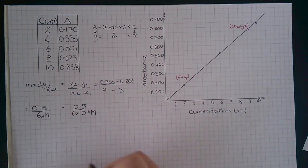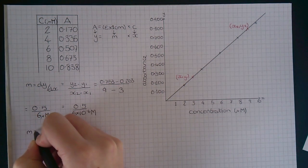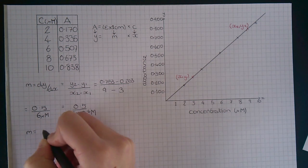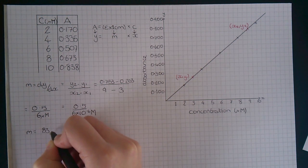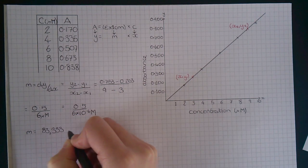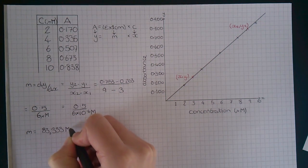When we work this out, we get that m equals 83,333 molar units to the minus 1.